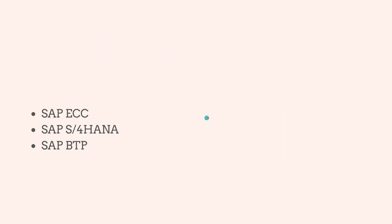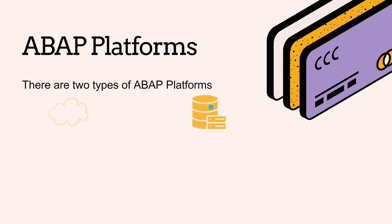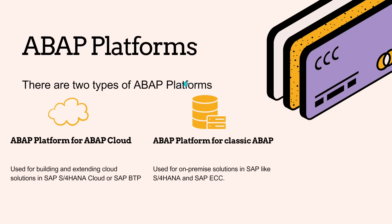There are two types of ABAP Platforms. First, ABAP Platform for ABAP Cloud, used for building and extending cloud solutions in SAP S/4HANA Cloud or SAP BTP. Second, ABAP Platform for Classic ABAP, used for on-premise solutions in SAP S/4HANA and SAP ECC.